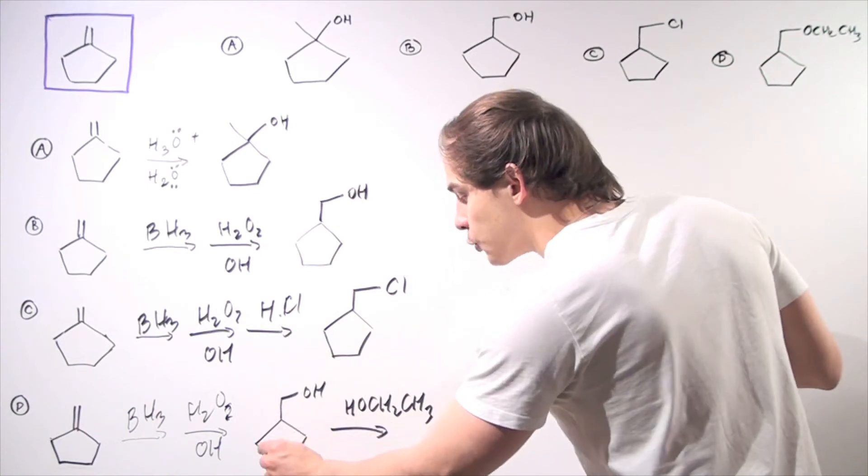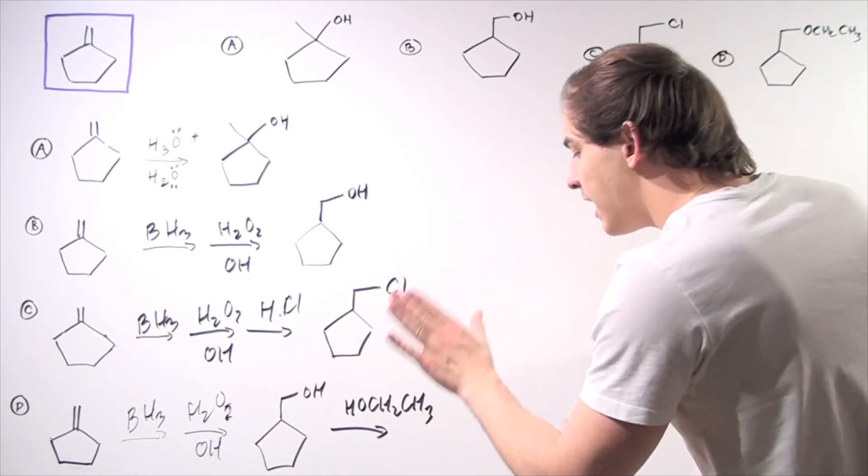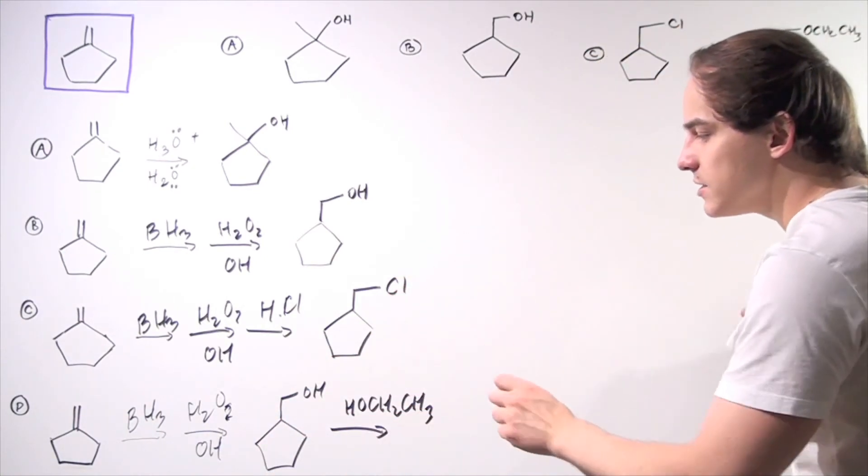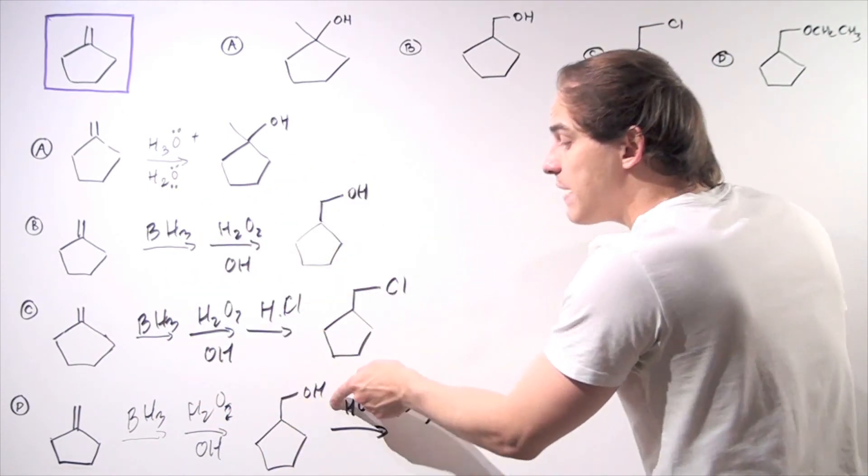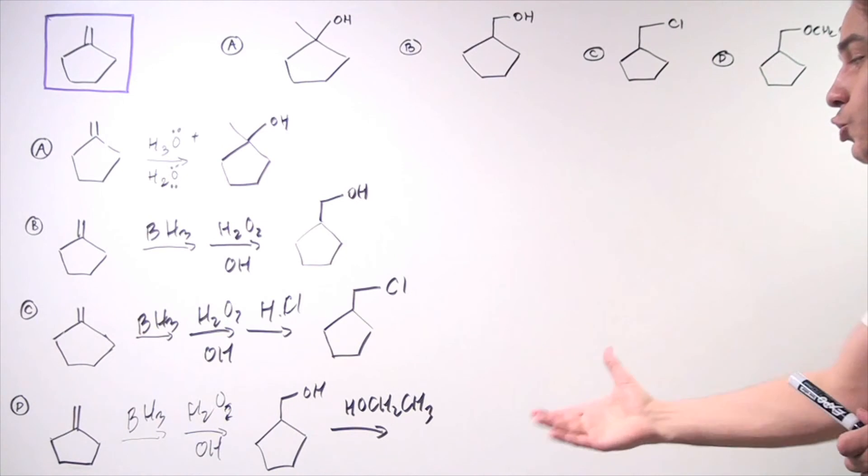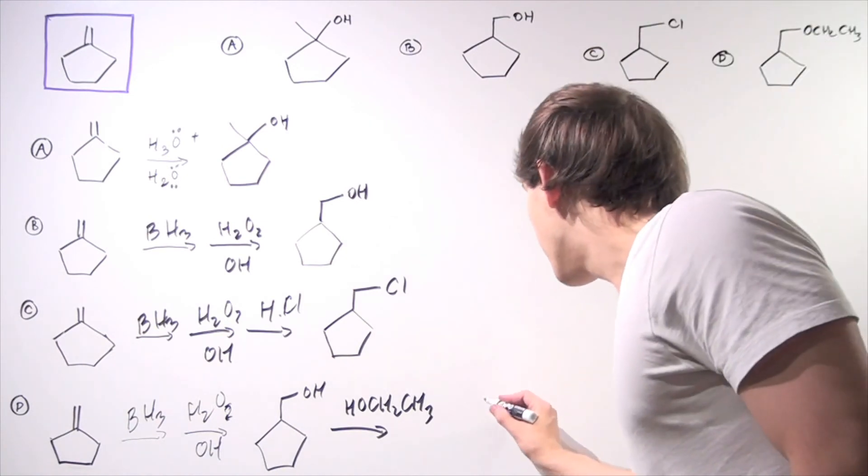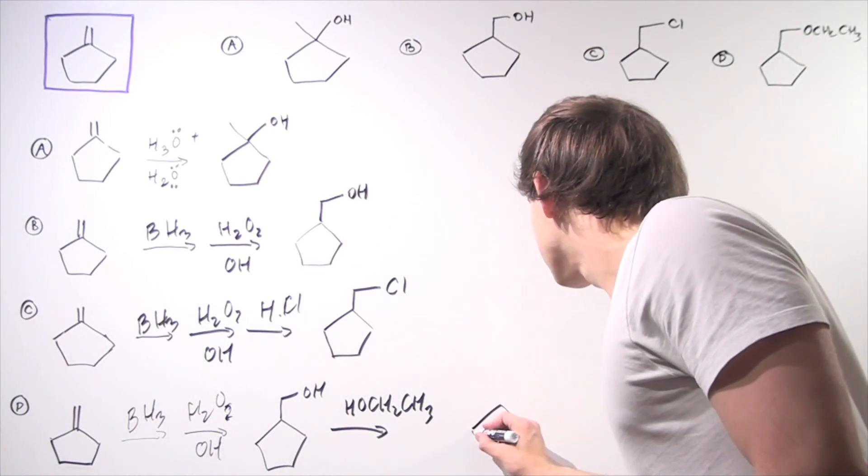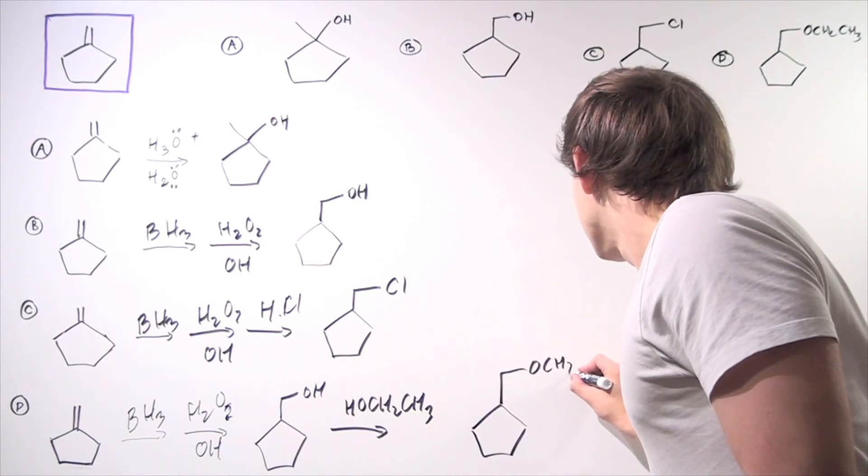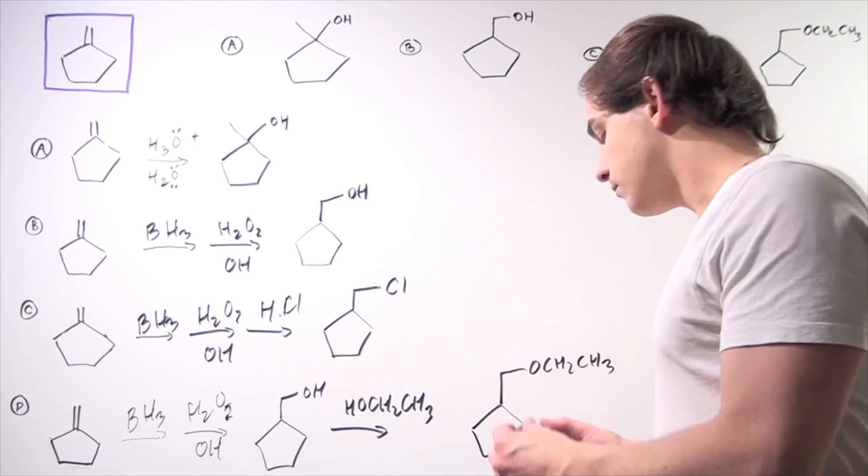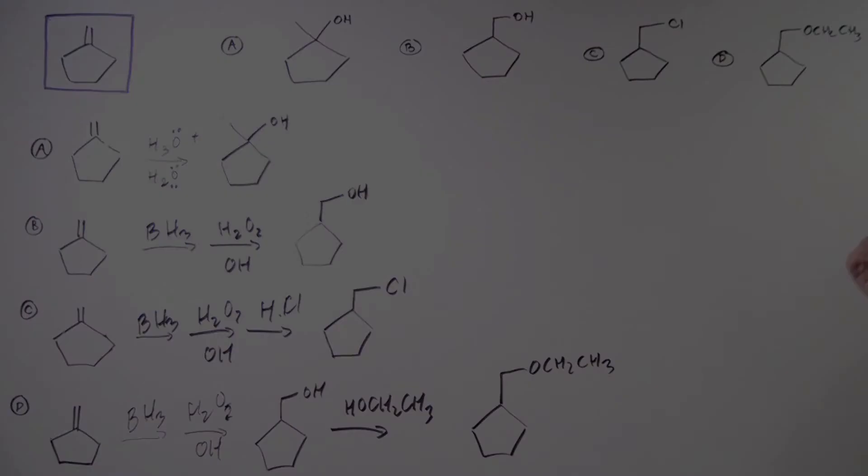This alcohol protonates this oxygen, creating a good leaving group. Then the alkoxide displaces this carbon, kicking off our good leaving group and producing the following molecule. This concludes our synthesis reaction.